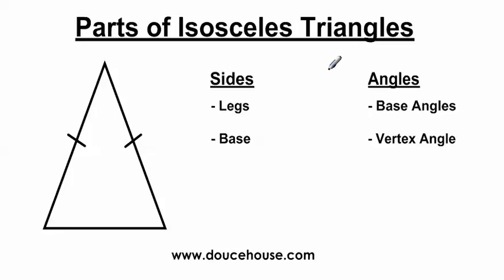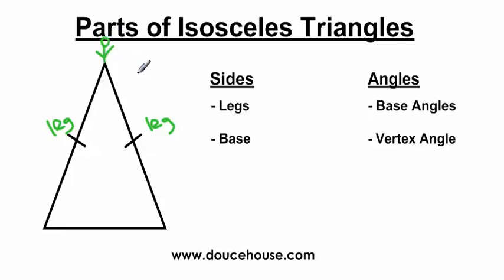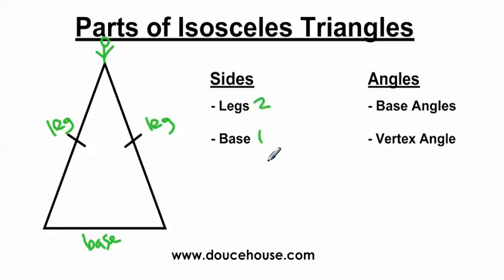There are parts of isosceles triangles that you need to know. If we're talking about sides, we have legs and we have bases. When I think of legs, I think of myself — I've got two legs, and my legs are the same length. Legs are the sides of the isosceles triangle that are congruent to each other. So this is a leg here and this is a leg here. The side that's not congruent to any other side is going to be the base. So we have two legs and one base on an isosceles triangle.